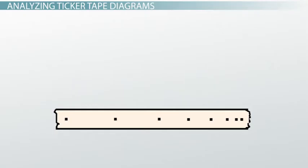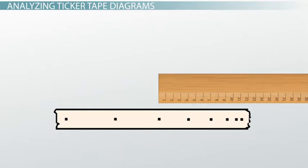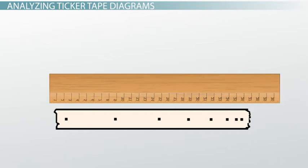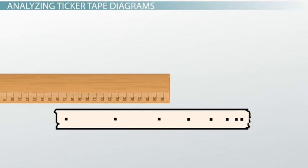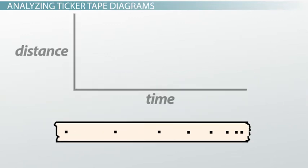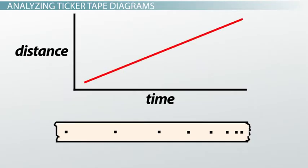If you want to analyse the motion quantitatively, all you have to do is measure the distance between each dot and plot the dots on a distance-time graph. Then you can complete whatever analysis you like from that point onwards.